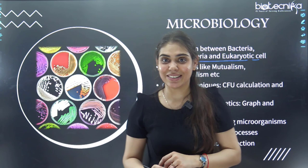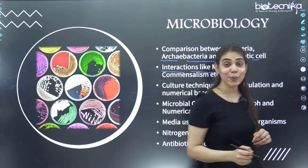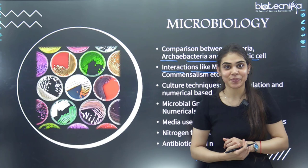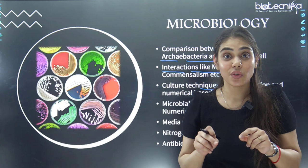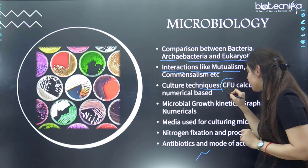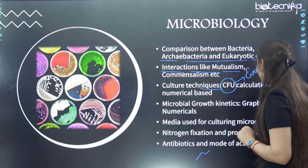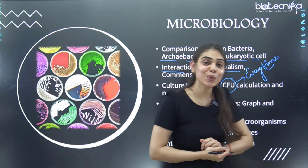Next are interactions — mutualism, commensalism — very simple things. Third is culture technique, which is very, very important. Every time, they ask not just one question but sometimes two or three questions from CFU calculation itself. You should know the formula and how to solve numericals related to colony forming units.